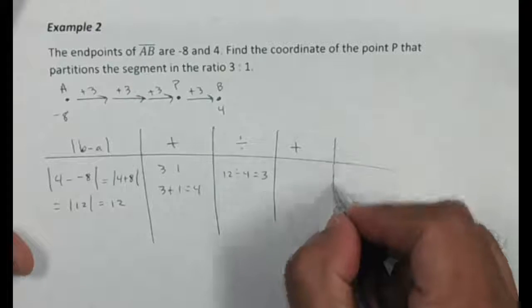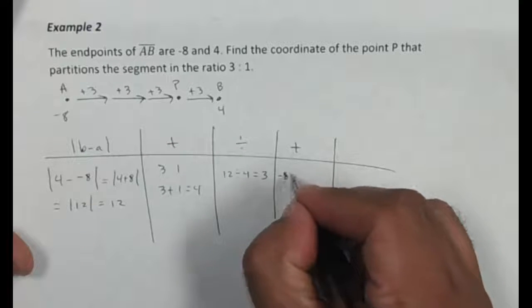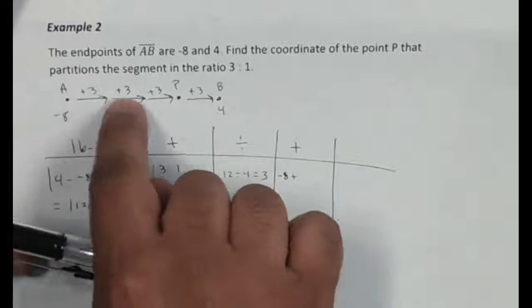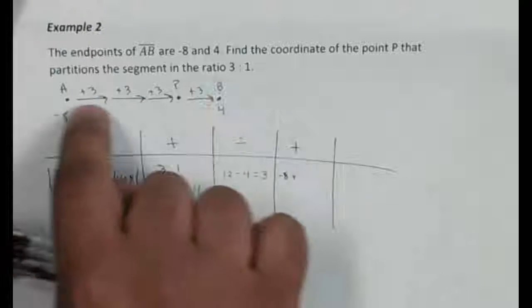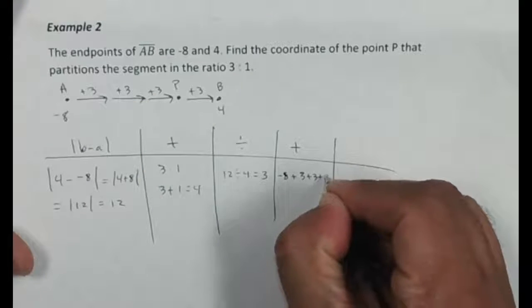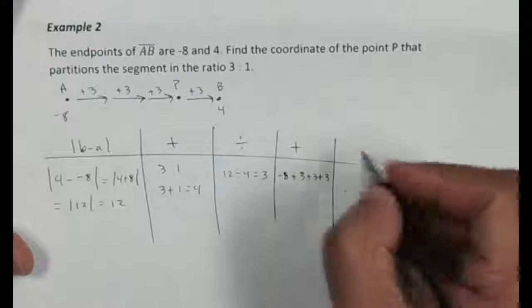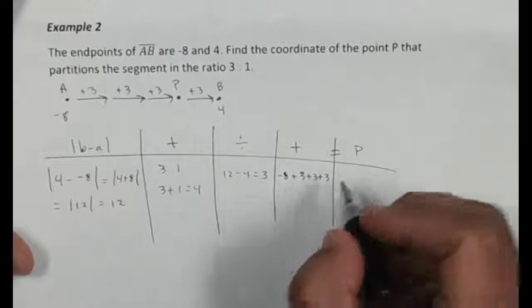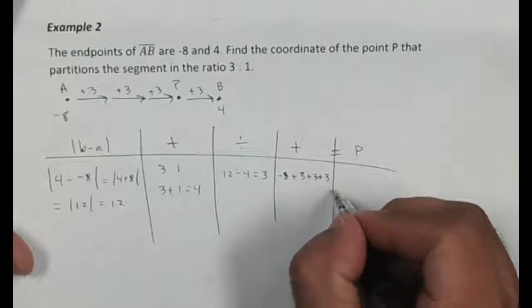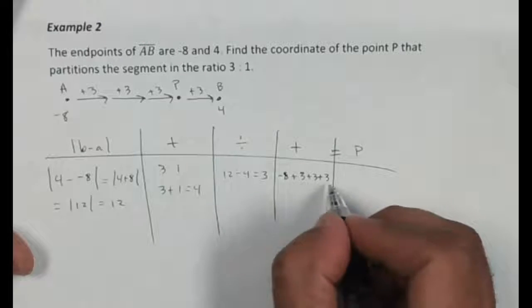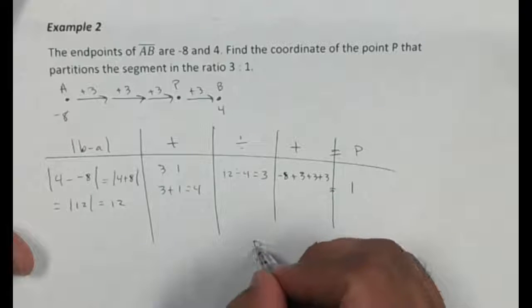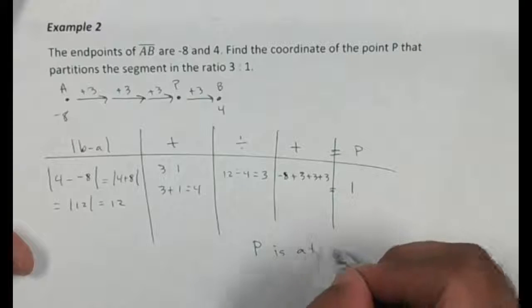Okay, so I want to take my point A, which is negative 8, and I want to add these three parts. So it's going to be plus 3, plus 3, plus 3. Okay, that's going to tell me where P is at. So if I add these, that's going to tell me negative 8 plus 3 plus 3 plus 3 is going to be at 1. So this tells me that P is at 1.